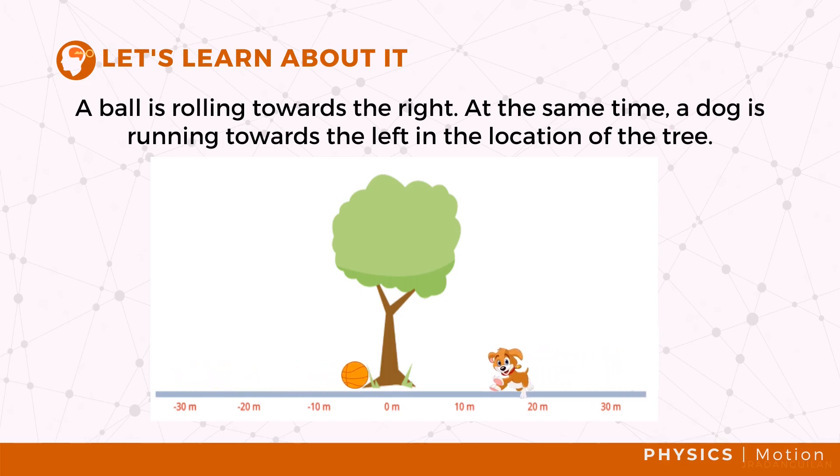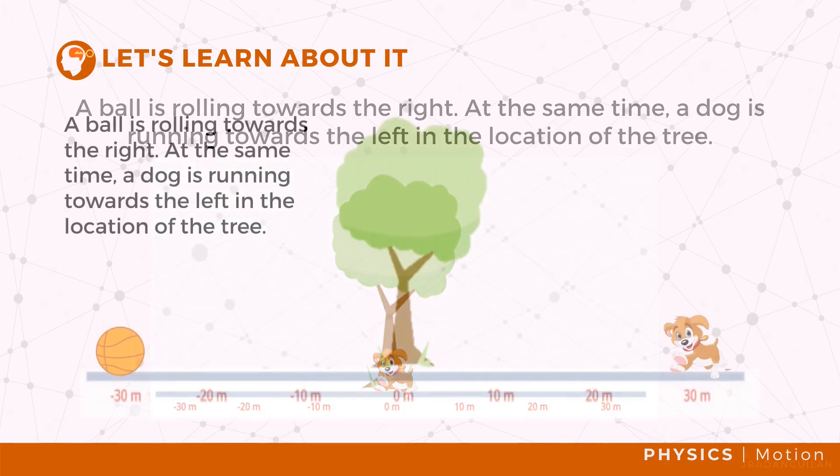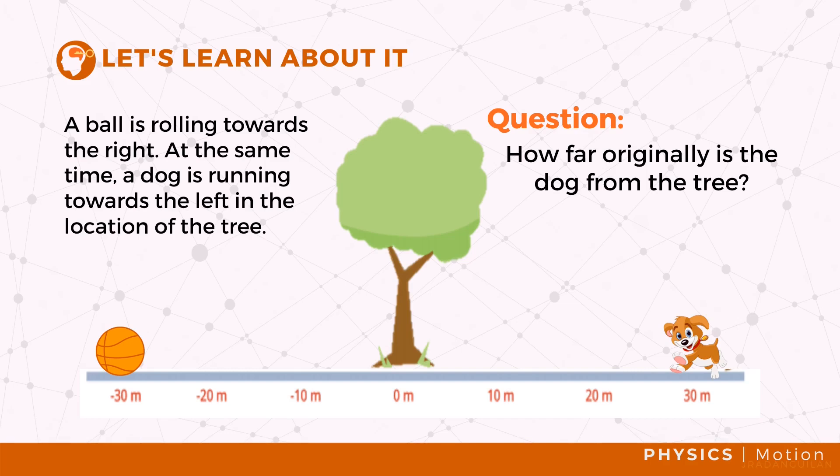For example, a ball is rolling towards the right at the same time the dog is running towards the left in the location of the tree. How far originally is the dog from the tree?